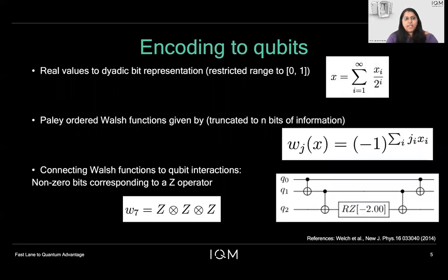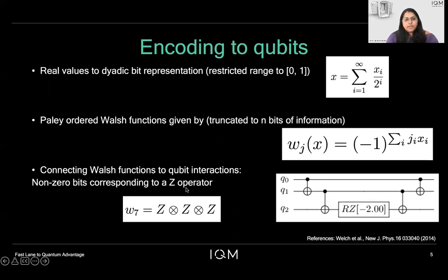Let me start with encoding the real values, which are the market values, in terms of a dyadic bit representation. Here we have normalized the market values to lie between 0 and 1. So any function of these market values can now be written in terms of the Walsh functions, which are a complete basis set. To convert to qubit interactions, the prescribed way is to find the non-zero bits of the nth order Walsh function and substitute them with the Z qubit interaction. For example, the 7th Walsh function: we would convert the number 7 to binary, which would be 111, and then this would correspond to a ZZZ interaction, implemented by the set of CNOT gates, as shown on the right.